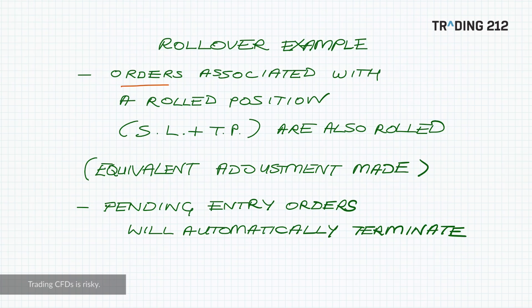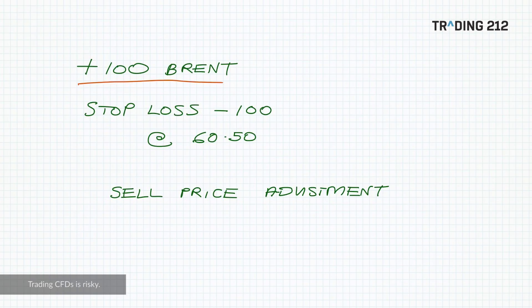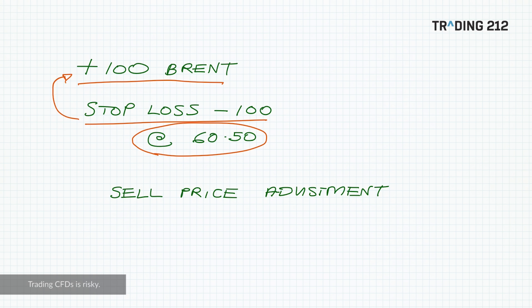Any orders associated with a rolled position — such as stop losses and take profit orders — are also rolled, and those will be subject to an equivalent adjustment to their levels to account for any premium or discount between the new contract and the expiring contract. Pending entry orders, however, will automatically terminate; they won't be rolled over. For example, if my position long 100 of Brent had a stop loss to sell 100 at $60.50, that stop loss would roll with my position but with an adjustment to its level corresponding to the new contract. It's not just oil that applies to — it's any position with an expiry date.